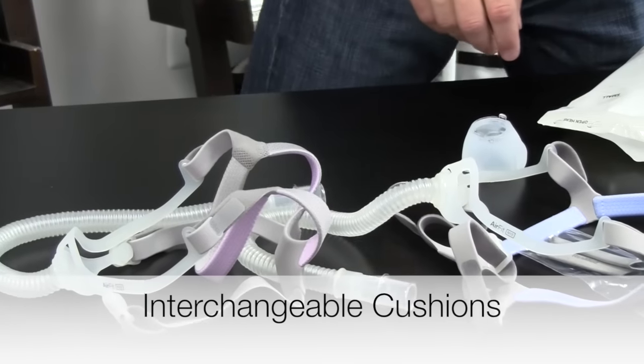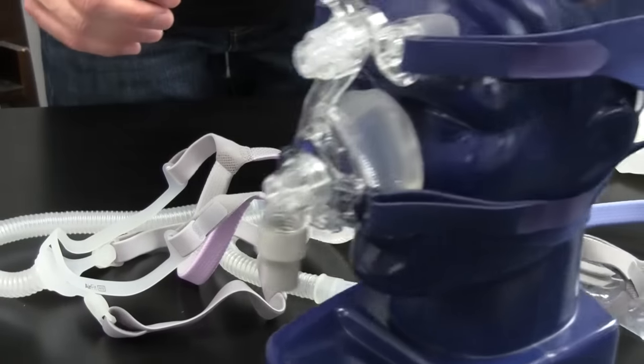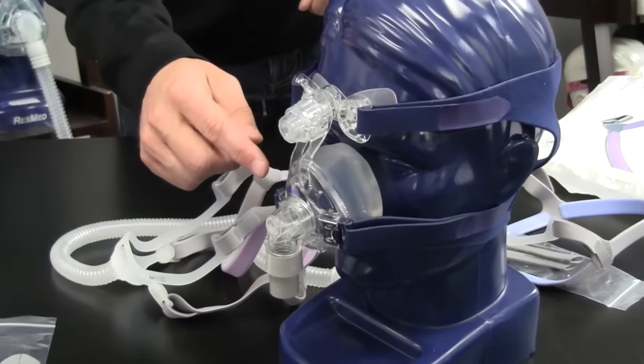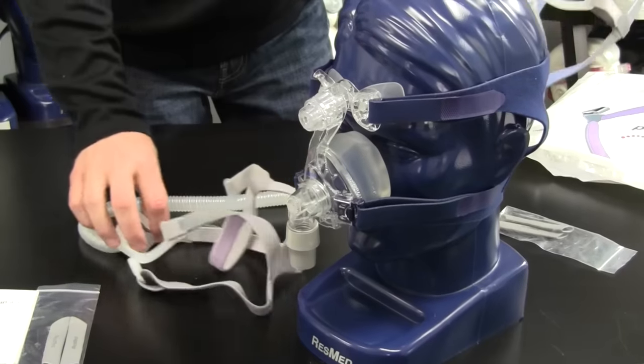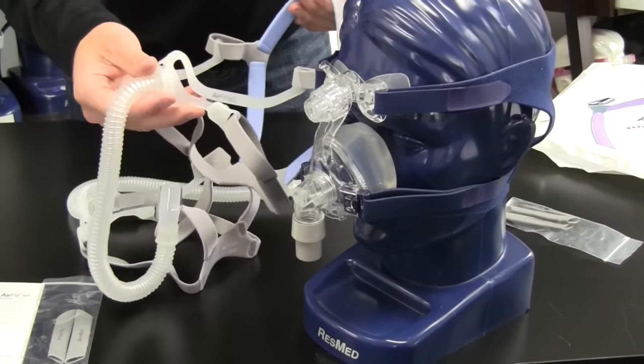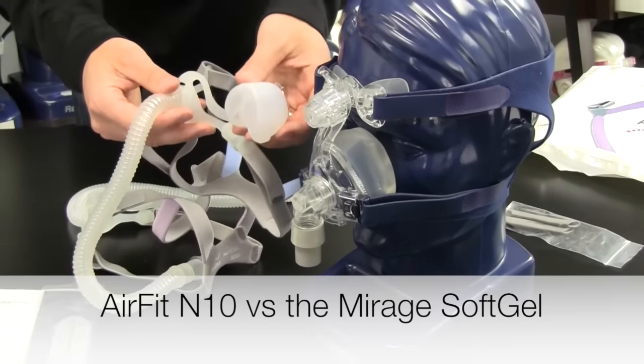To give you an idea, this is one of ResMed's older masks. This is called the Softgel. Although it's a very good mask, you can see the difference in size. And here's the AirFit mask. The cushion's so much smaller.